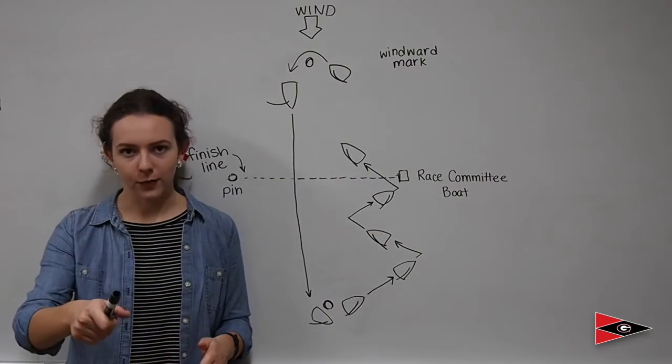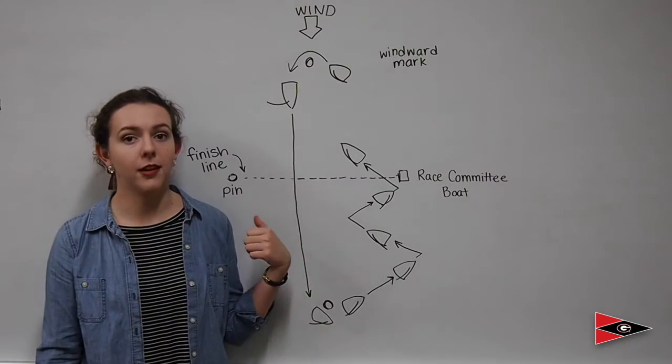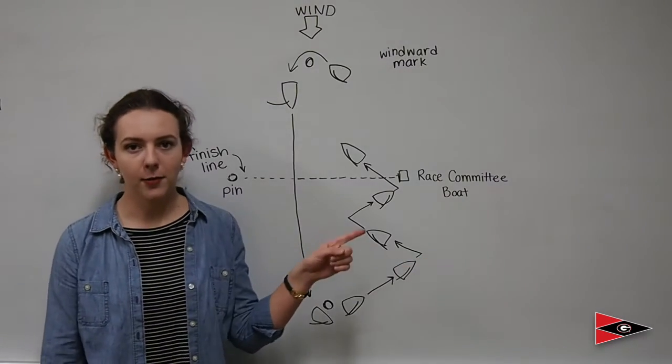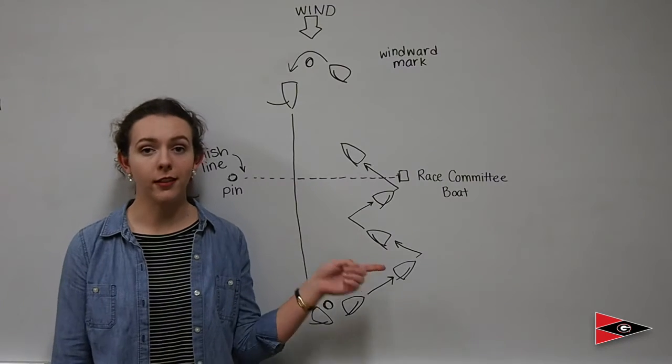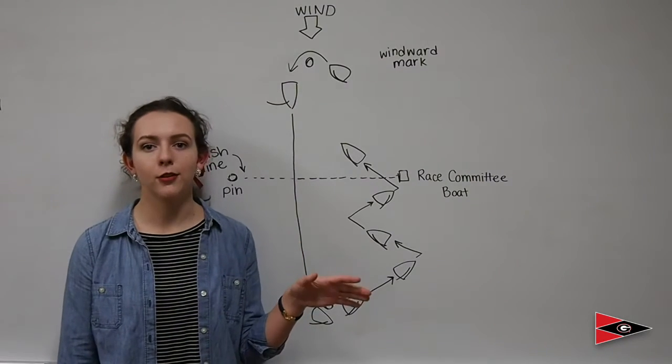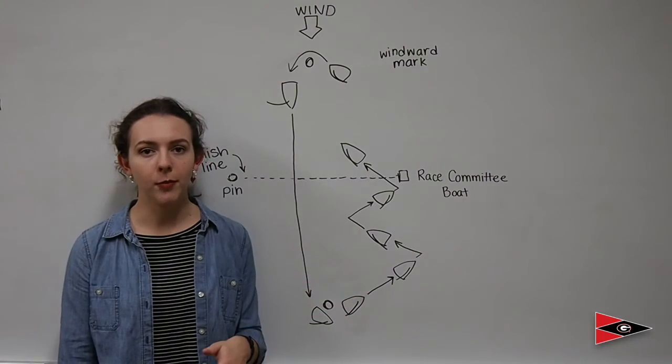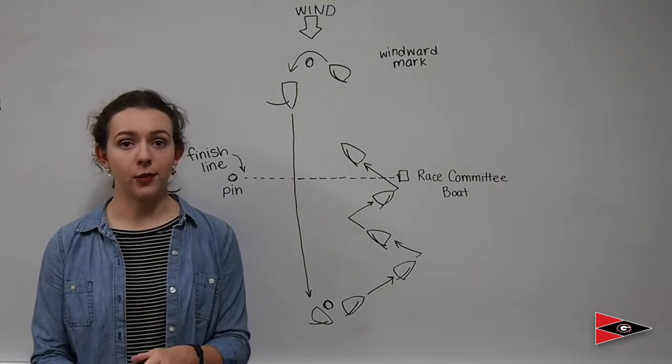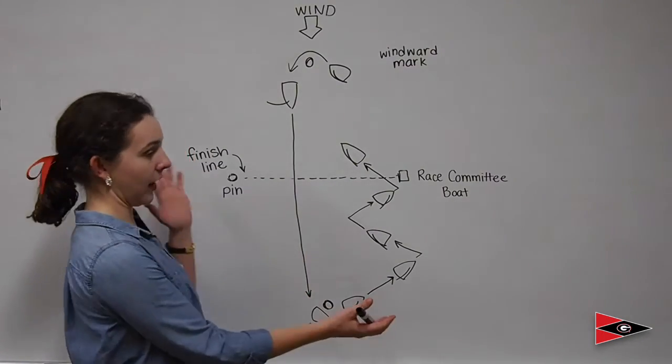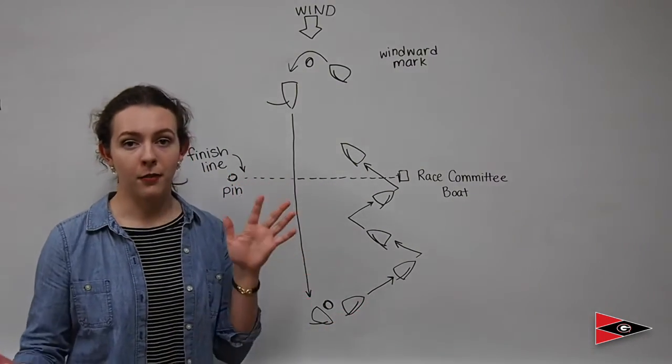And in order for your finish to be legal, you must sail in between the pin and the race committee boat. On the race committee boat, there will be someone who is watching the line, just like at the start, to take down boat numbers and record finishes. If your race is only one lap, this is a successful completion of a race.